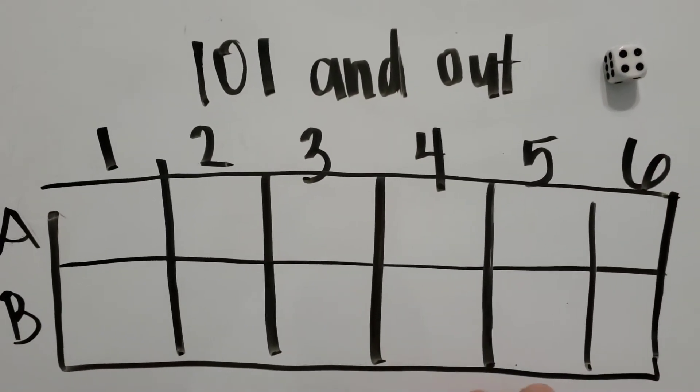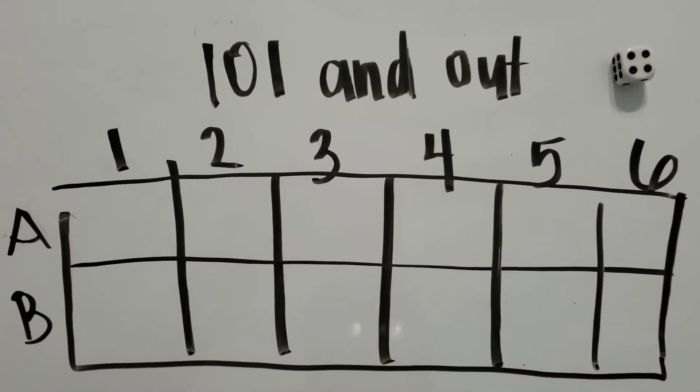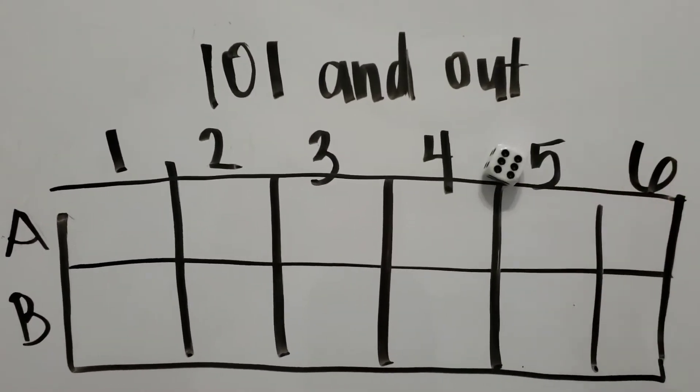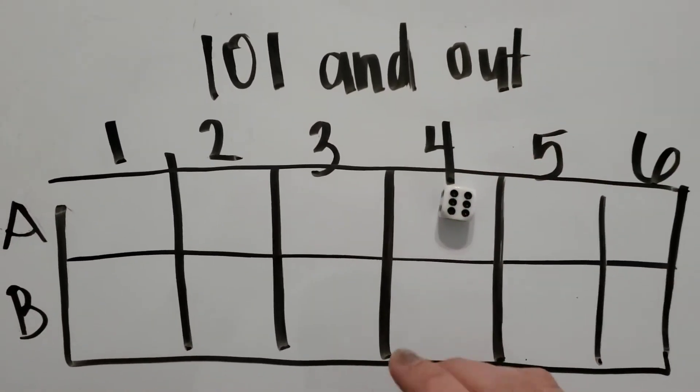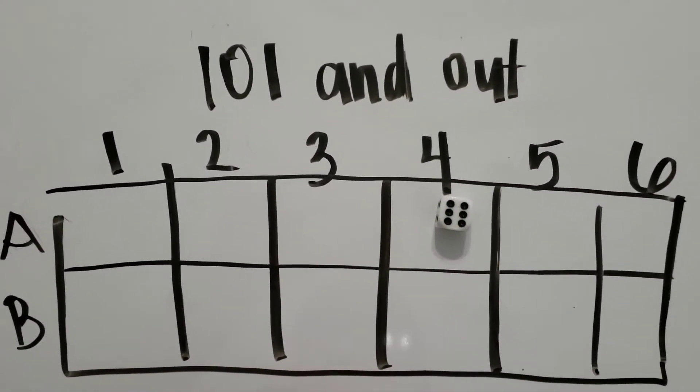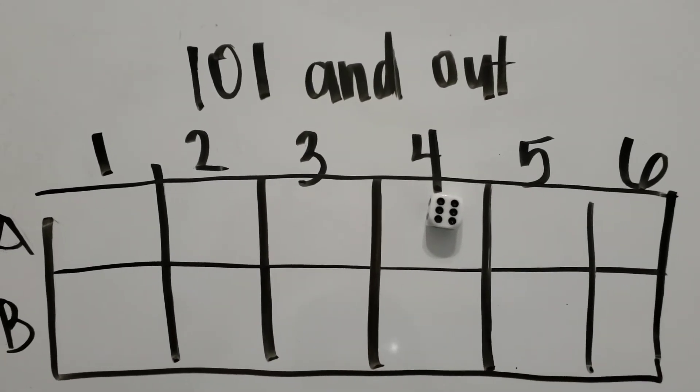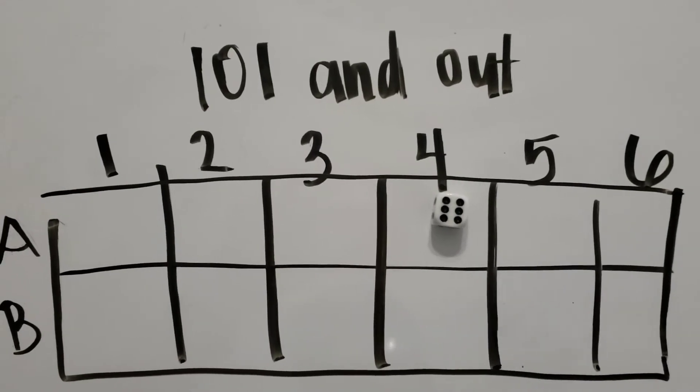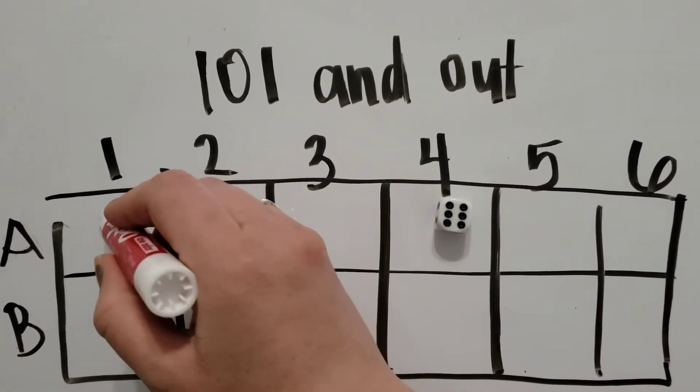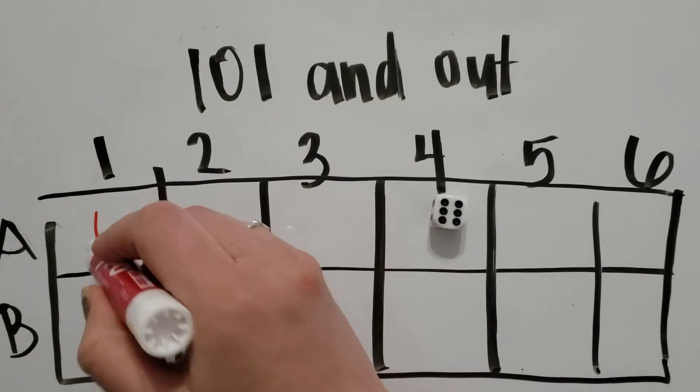If I was team A and I rolled the dice and I got a six, six would be 60 if I put it in the tens place or six if I put it in the ones. And I'm going to go ahead and use that as a ones place. So I'm going to put a six.